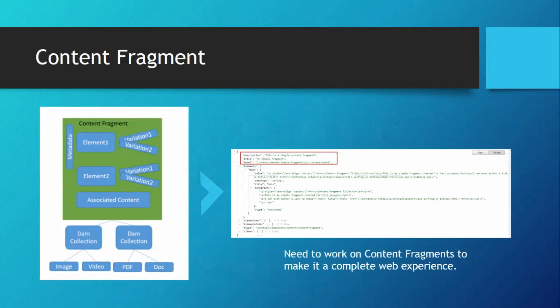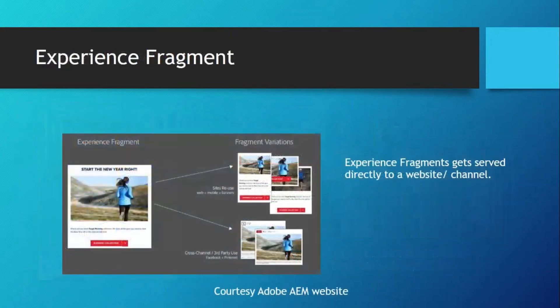We need to work on content fragments to make it a complete web experience. Now let us see an experience fragment. Experience fragments get served directly to a website or channel. On the left hand side we can see different experience fragment variations. One set of fragment variations are taken to web, mobile, banners, etc., and the second set are taken to cross-channel applications and third-party uses like Facebook, Pinterest, etc.